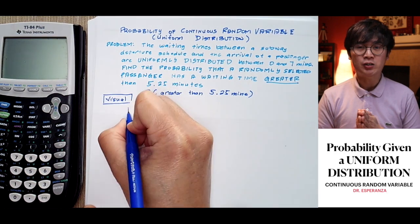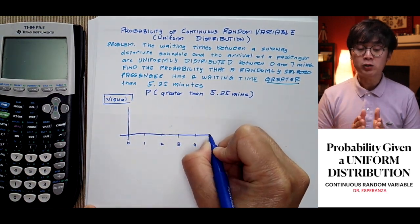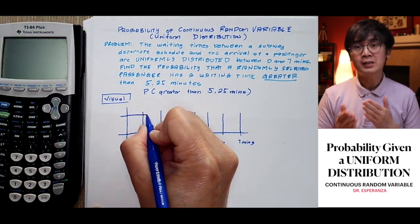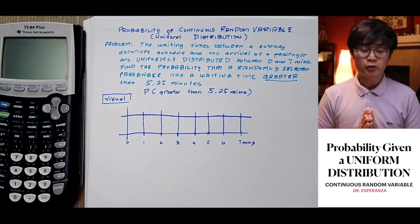For this visual, since our distribution is uniformly distributed, the distribution will resemble a rectangle. So our visual has a y-axis and x-axis.